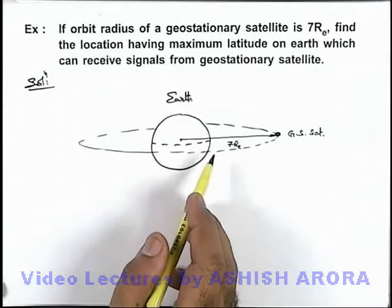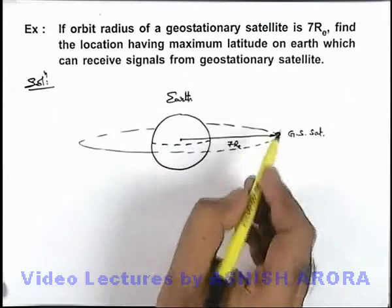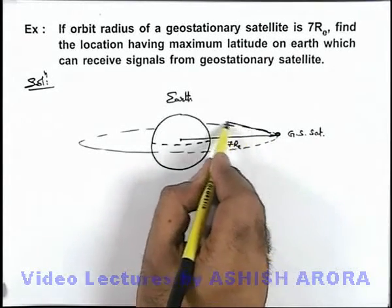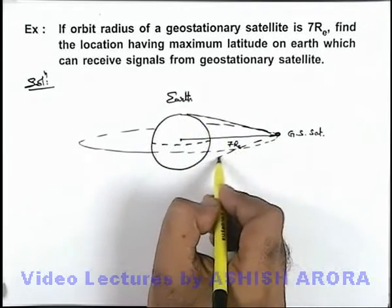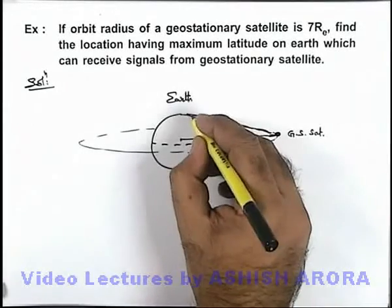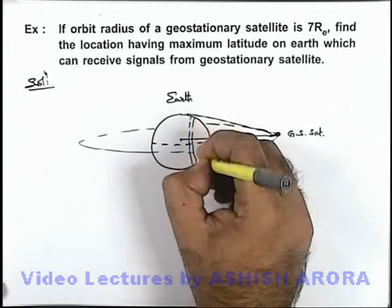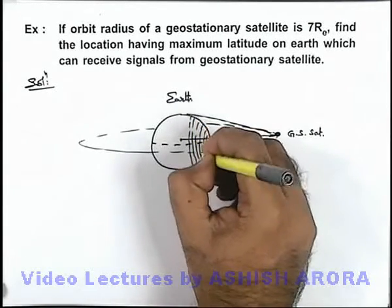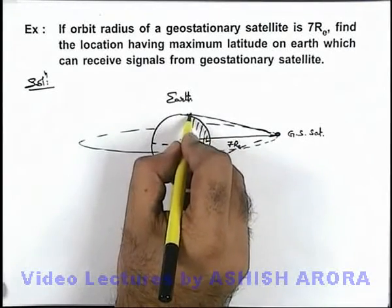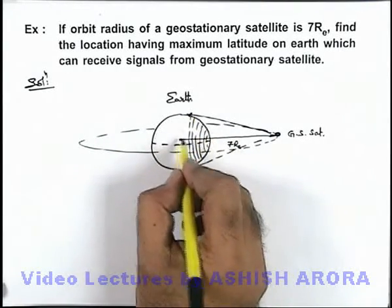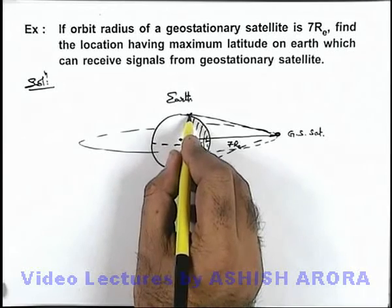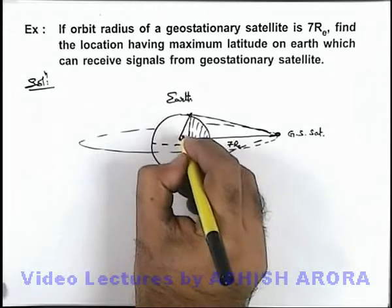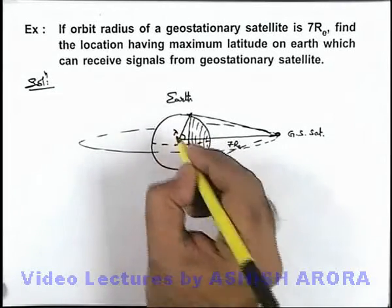If we talk about the reception area on Earth where signals can be sent by the geostationary satellite, this can be obtained by drawing tangents on the Earth's surface. This will be the zone — a spherical cap zone — in which signals from the geostationary satellite can be received. The farthest point from the equator where signals can be received will be the edge of this spherical cap zone, located at a latitude λ.